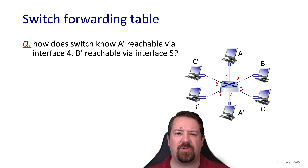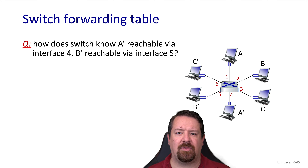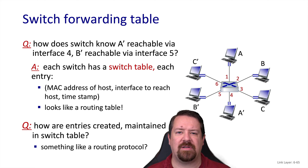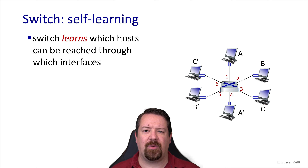The switch doesn't require any configuration to perform its basic functions. So the question is, how does it know to forward frames to A' out the correct interface? The switch uses the destination MAC addresses in the frames, so somehow it has to learn that frames destined to A's MAC address need to be forwarded out port 4. This is what is stored in the switch's forwarding table: the MAC address, associated port, and a timeout. Unlike Layer 3 routers where we had to configure the routing table either manually or using a dynamic routing protocol, a Layer 2 switch has no routing protocol and does not need to communicate with other switches. Instead, it learns which hosts can be reached through which interface.